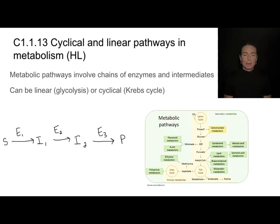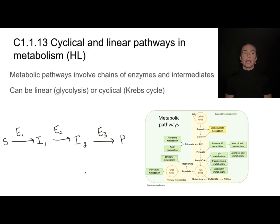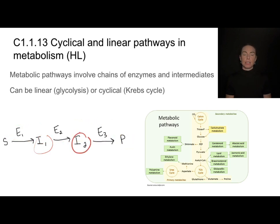An example might look like this: starting with an original substrate, the first enzyme creates an intermediate product, which is the substrate for enzyme 2. Enzyme 2 converts that into another intermediate, and then a third enzyme converts it into the final product. To get from substrate to final product, you may need a series of enzymes producing a series of intermediates.